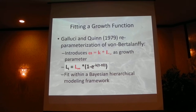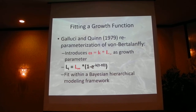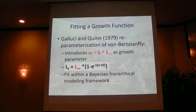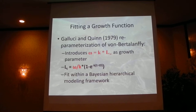Now for a bit of math. We fit a reparameterization of the classic von Bertalanffy length growth function. It introduces a new growth parameter, omega, highlighted in red: omega equals the classic growth parameter K multiplied by L-infinity. By simple substitution, L-infinity in the classic equation is replaced with omega divided by K. The omega parameter captures growth near age zero, which is exactly what we're interested in. We fit this using a Bayesian hierarchical modeling framework that allows the flexibility needed to compare growth between the six populations.